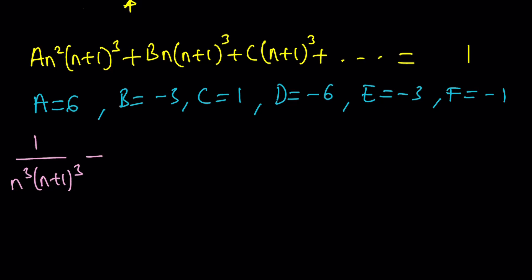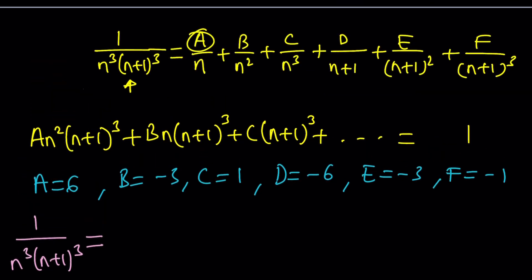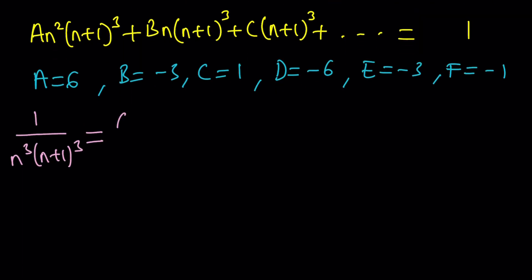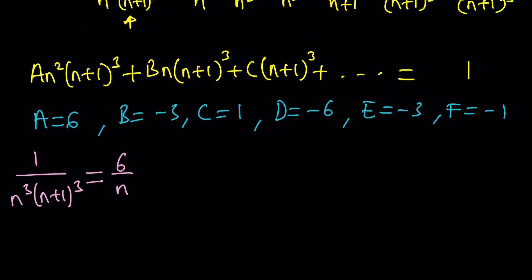Go ahead and write it out. A is 6, so it's going to give us 6 over n. B is negative 3, so negative 3 over n squared. And then C is 1, 1 over n cubed. And D is negative 6, negative 6 over n plus 1. Then negative 3 over n plus 1 squared. And finally, minus 1 over n plus 1 cubed.